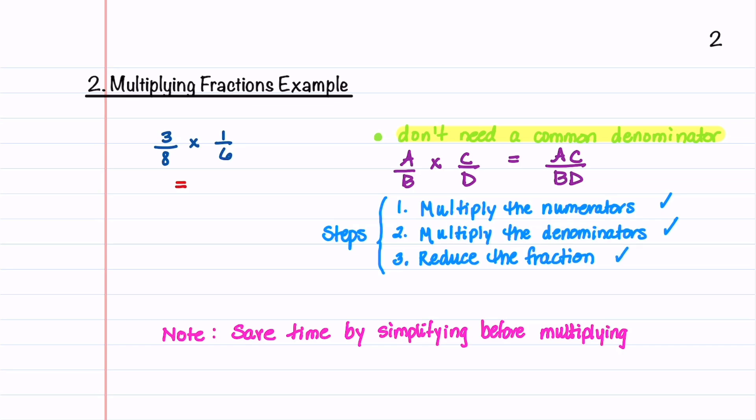For the numerator, we multiply 3 times 1 and get 3, and for the denominator, we multiply 8 times 6 and get 48. 3 goes into 48 16 times, so this reduces to 1 divided by 16.